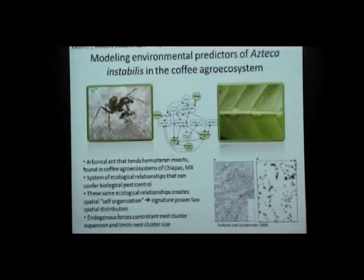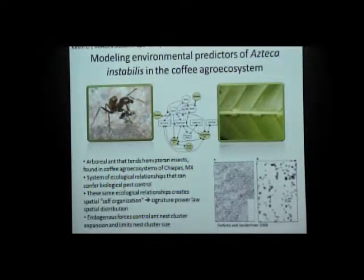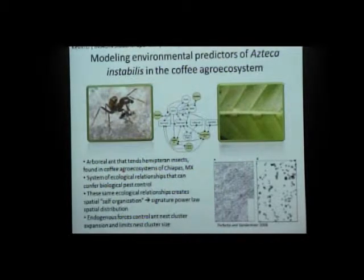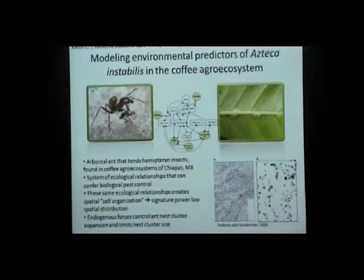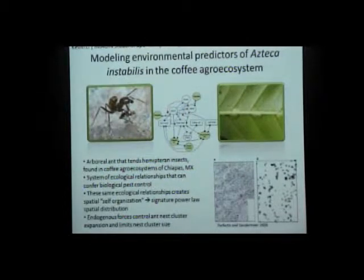When there is a high nest density, forces such as the white halo fungus or a kind of fly called the phorid fly, which preys on higher-density nest clusters, will cause a very dense nest cluster to contract. So these forces are all within this system of relationships.